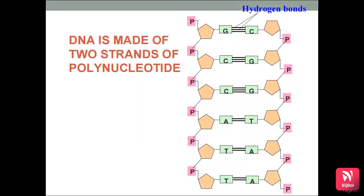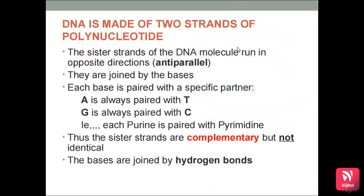DNA is made of two strands of polynucleotides. The sister strands of the DNA molecule run in opposite directions — that means anti-parallel — and are joined by their bases. Each base is paired with a specific partner: A is always paired with T, and G is always paired with C. Each purine is paired with a pyrimidine, so the sister strands are complementary but not identical. The bases are joined by hydrogen bonds.